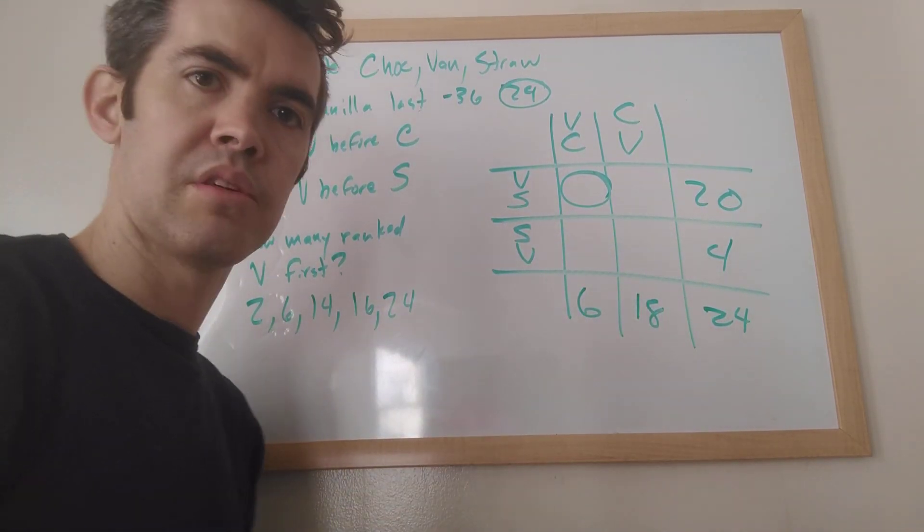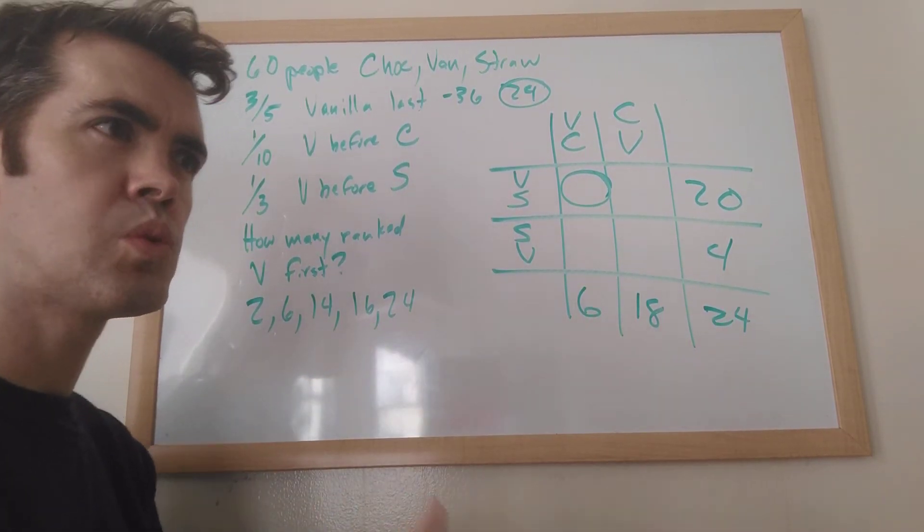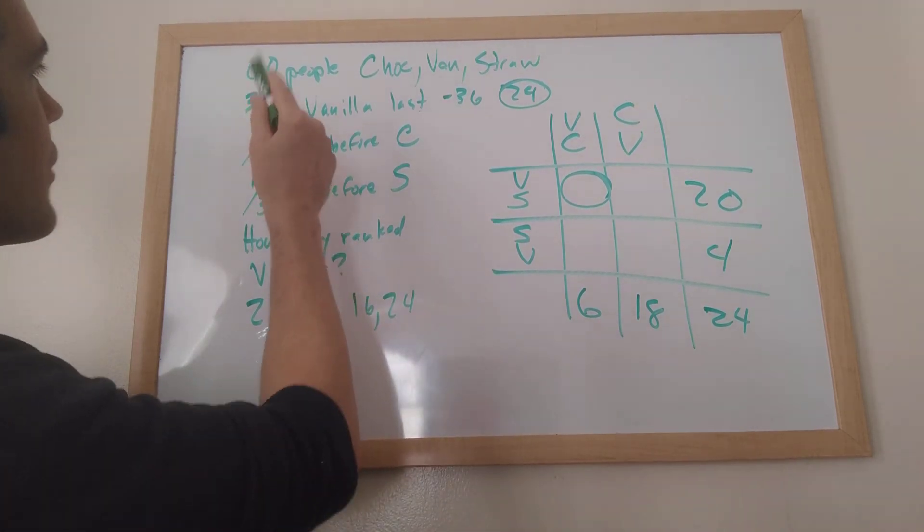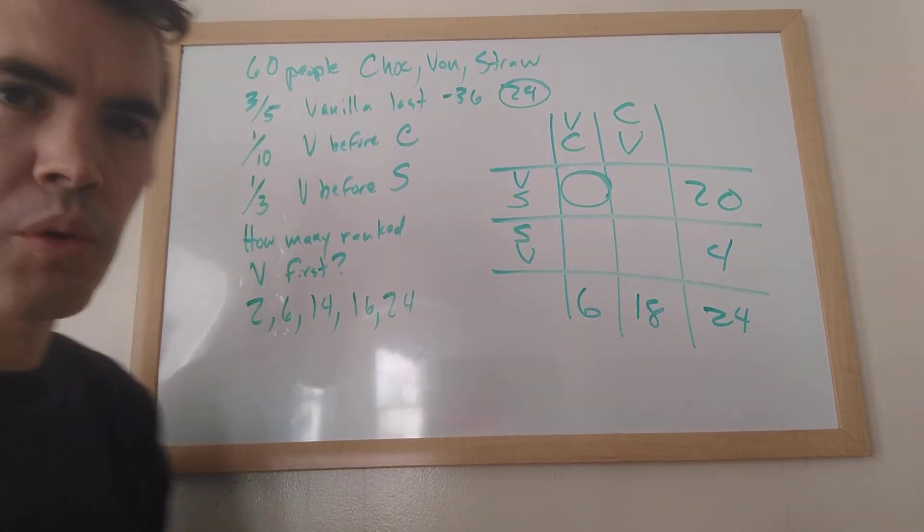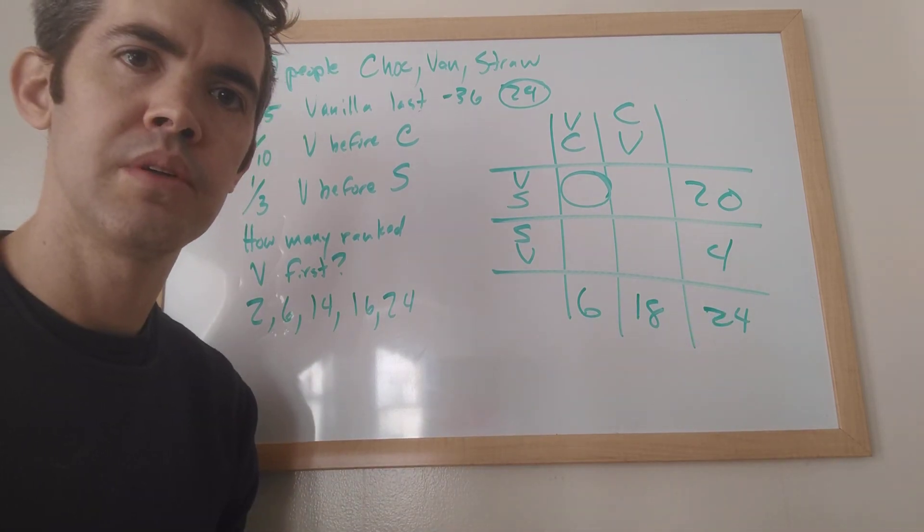So here's a trap that they like to do in these double overlapping sets problems, which is what we naturally do is we look for numbers. That's what I did. I look for three-fifths and 60 and one-tenth and one-third. We look for all these numbers and then we fill them in. And then I'm like, oh, I'm out of numbers. I don't know what to do next.